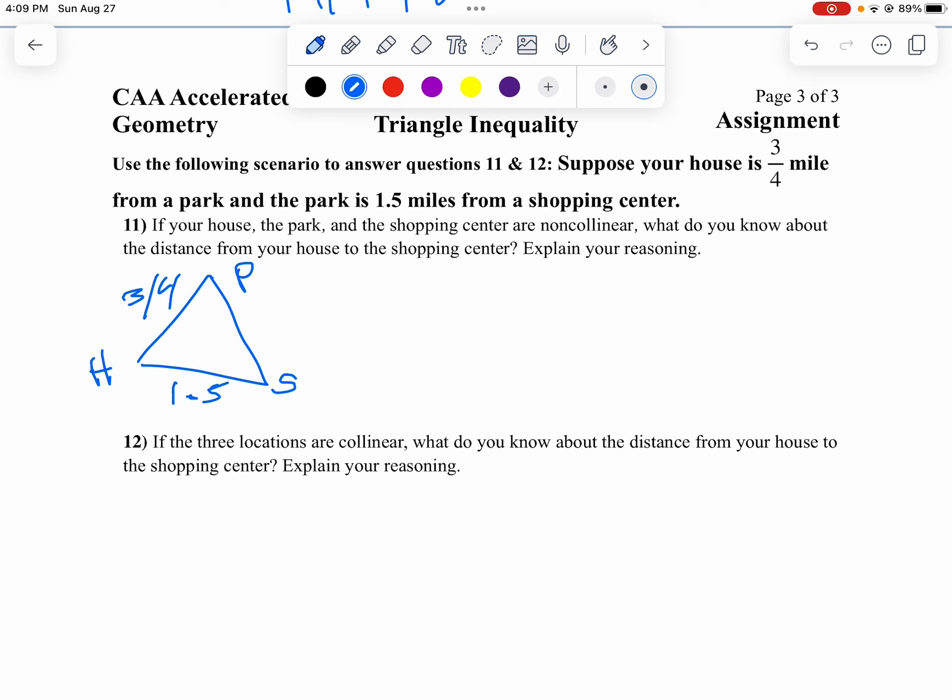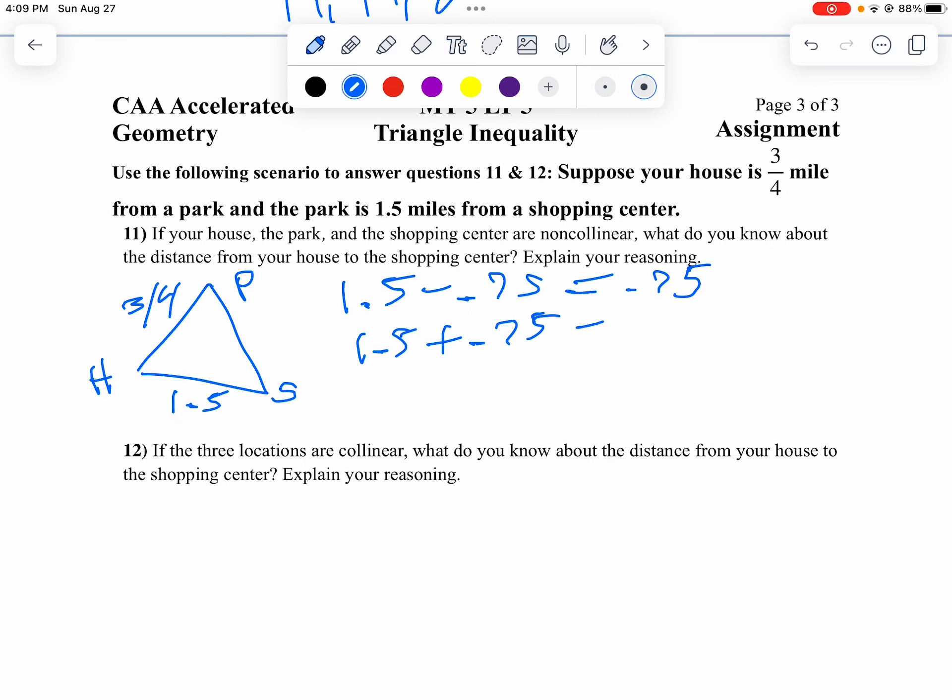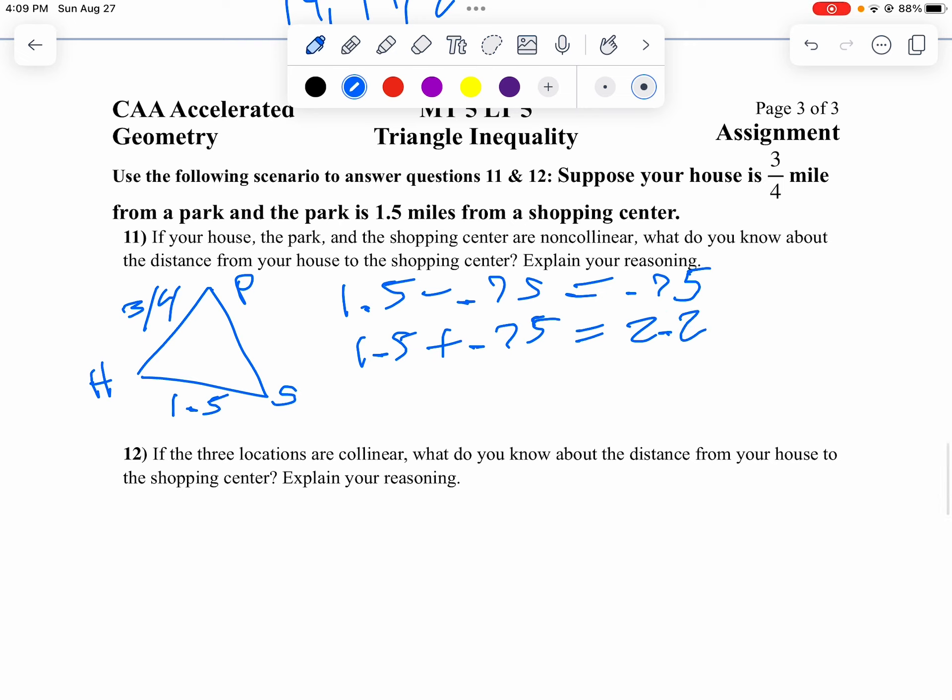And then what is the range between the park and the shopping center? Well, we know if we subtract them, that would be the smallest. So one-point-five minus point-seven-five, I'll make three-fourths into a decimal, I'd get point-seven-five. And then one-point-five plus point-seven-five would be two-point-two-five. So it's between 0.75 and 2.25.